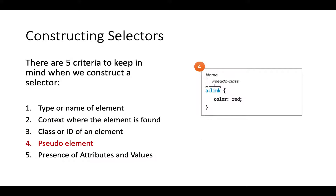We can also talk about pseudo-elements. Here, the selector is A, which is the link. But you can have different states of the link — when it is a link, when it's being clicked, or when the link has been visited. You have pseudo-classes to define different states of the link.